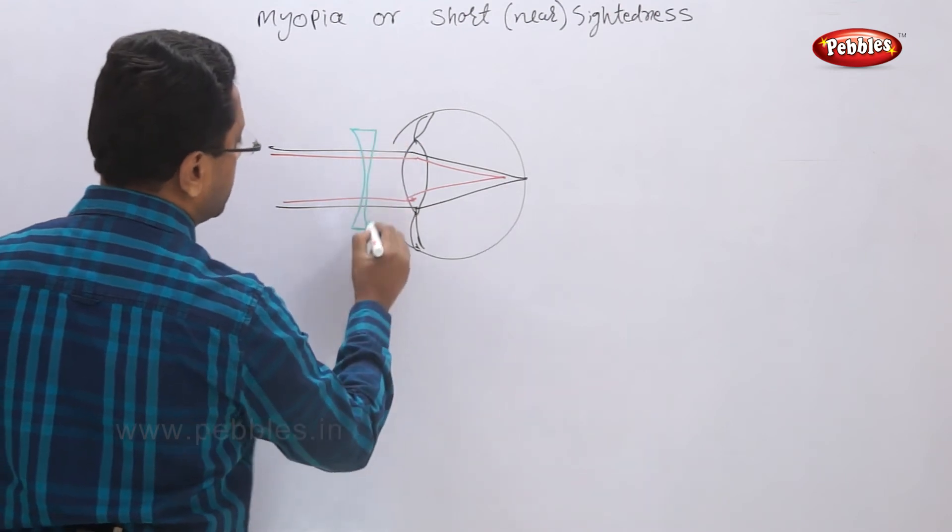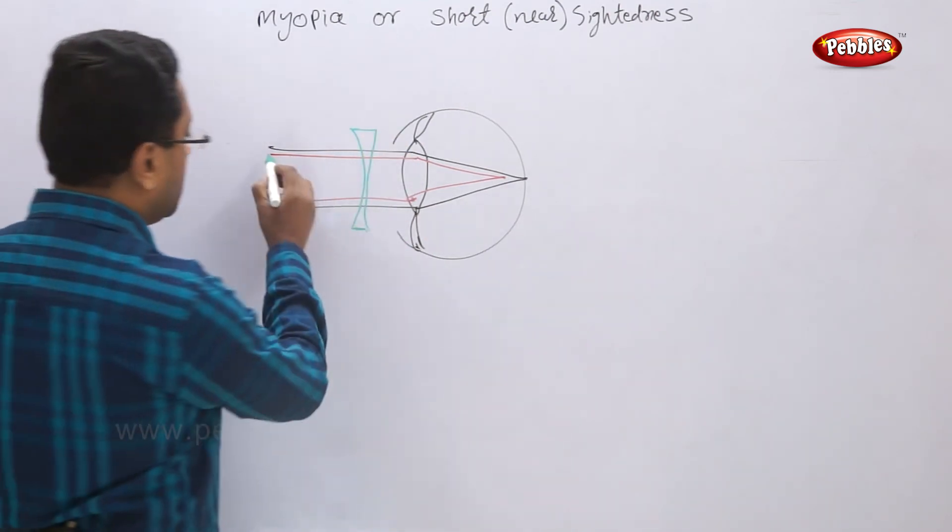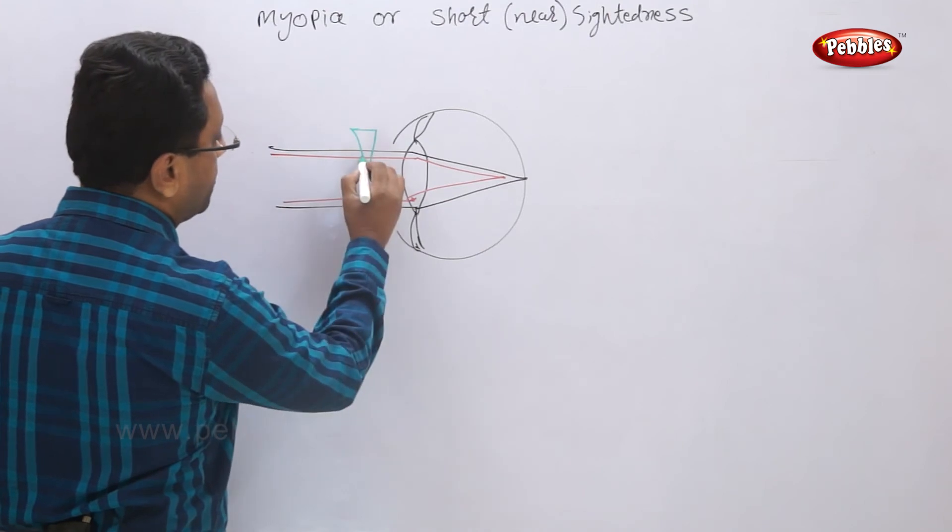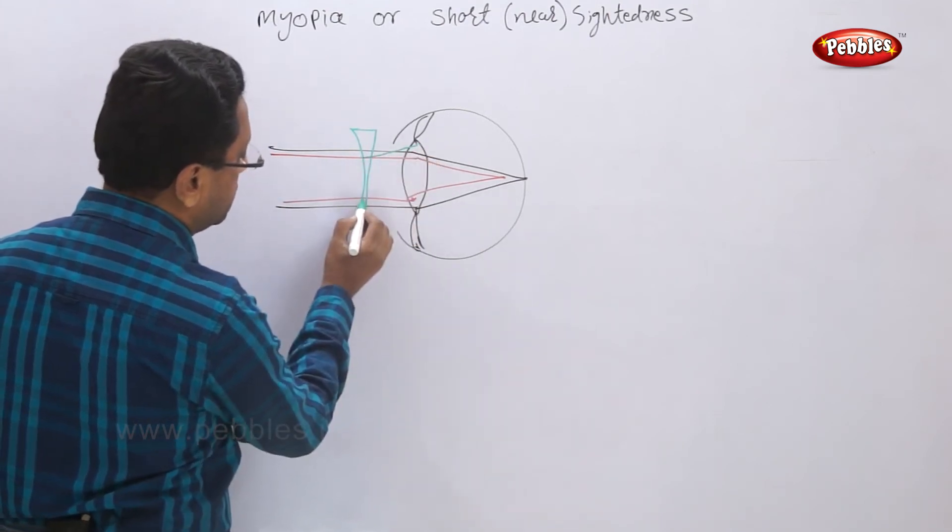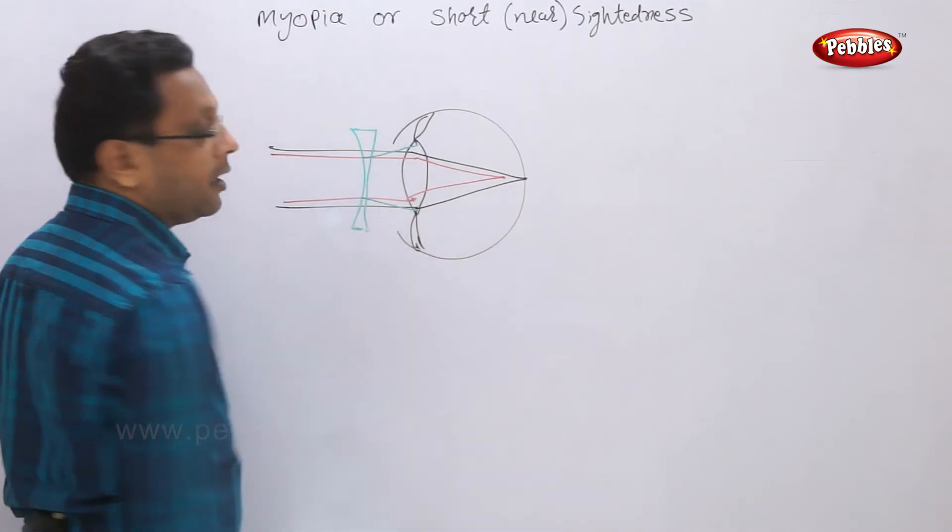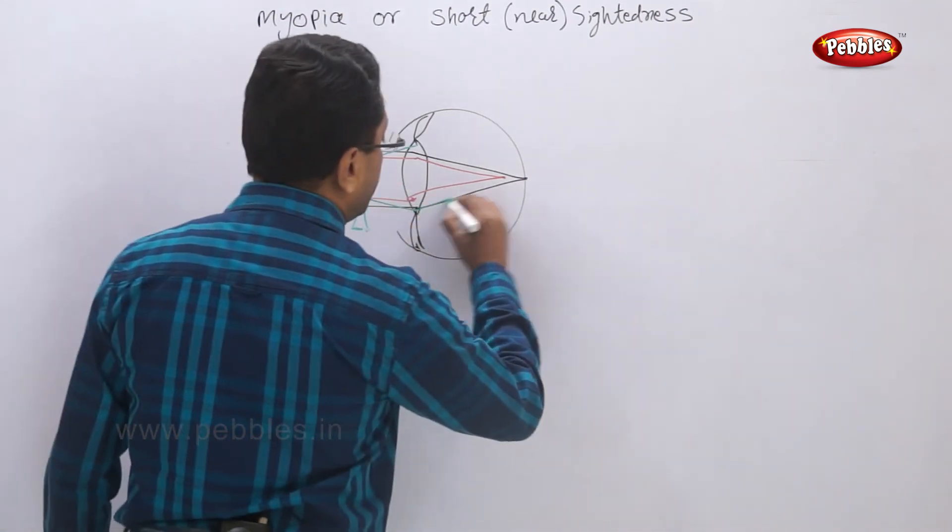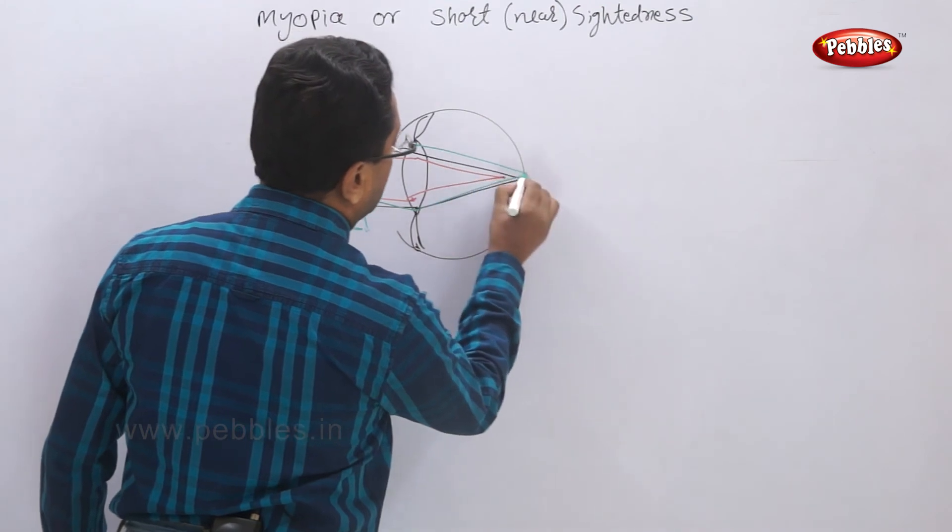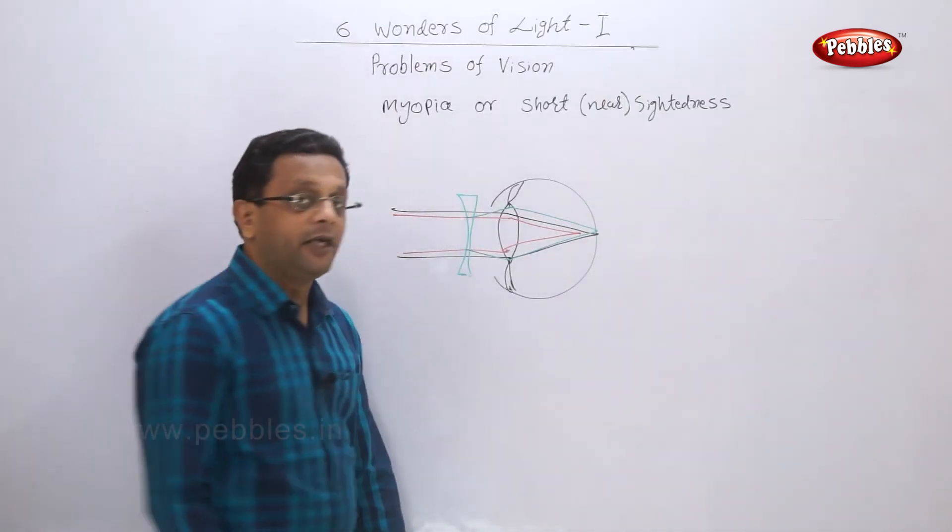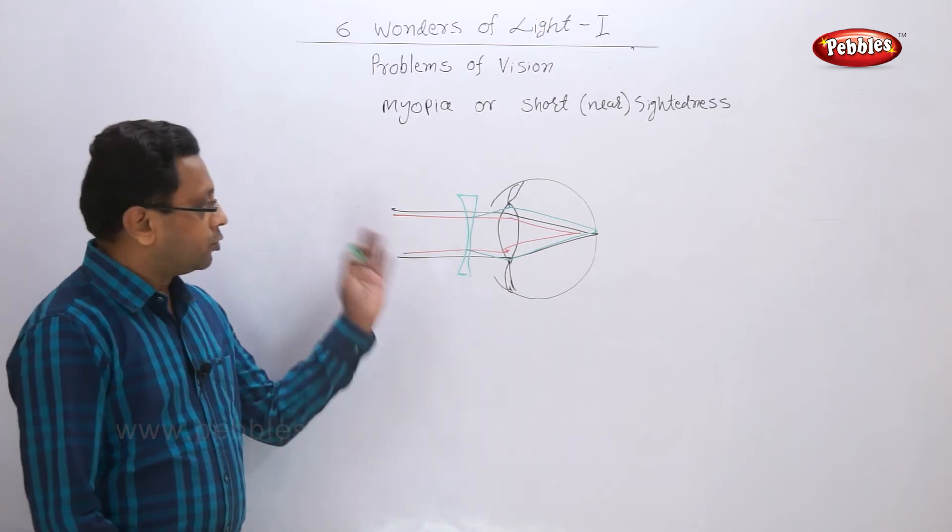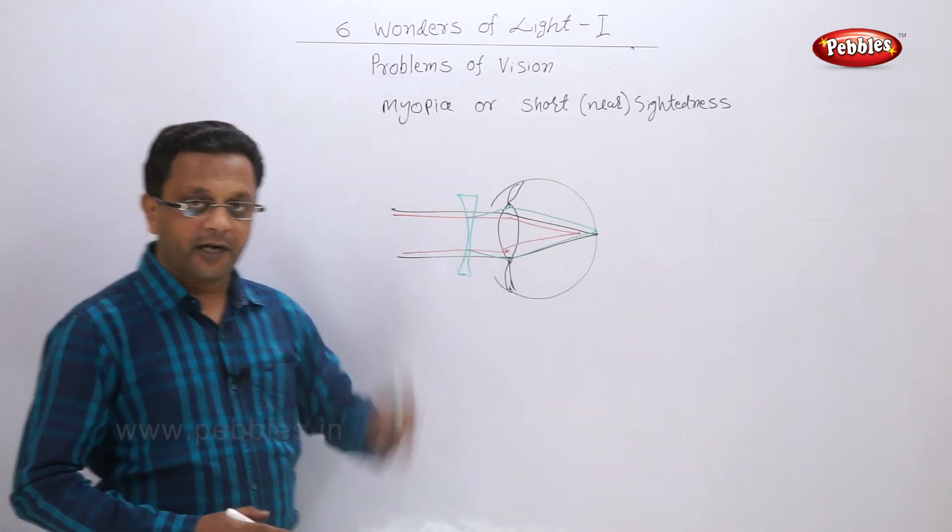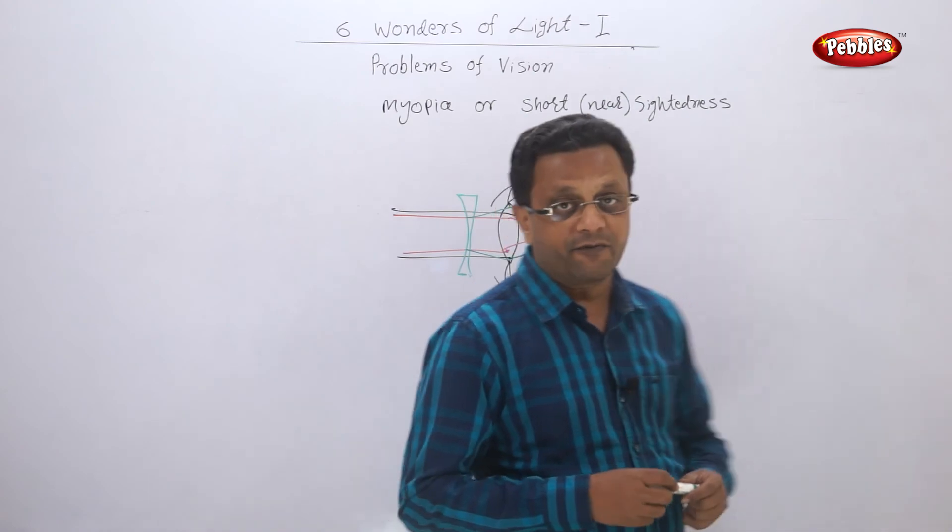The concave lens in front of our eyes, what will happen? This ray when coming to the lens will first get diverged. And after that it will fall here and now the image is formed on the retina. So now as the image is formed on the retina, you will have clear vision.